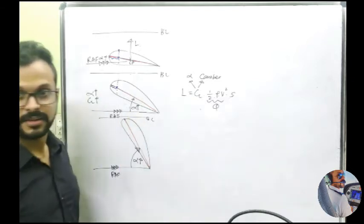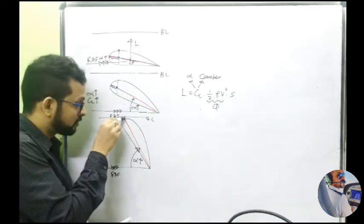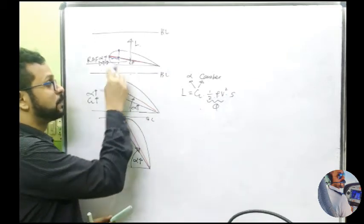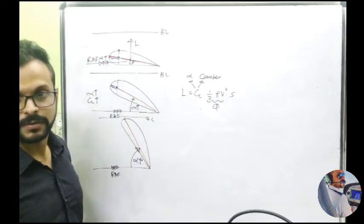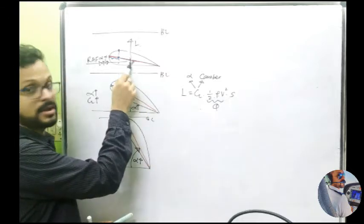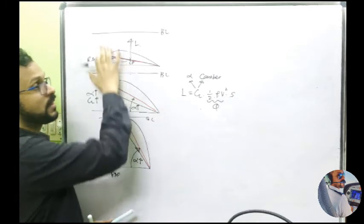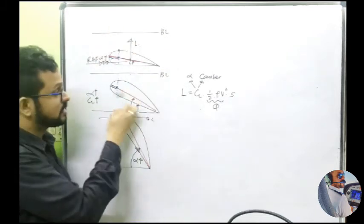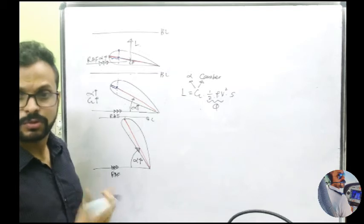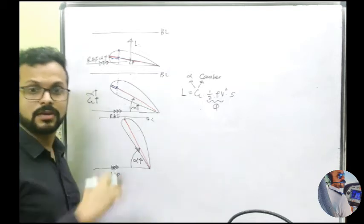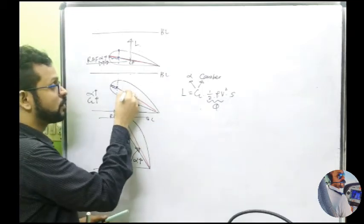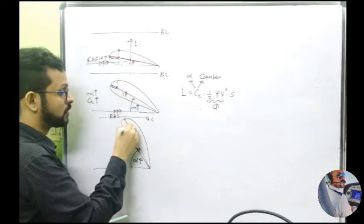That is where the area of cross section with the boundary layer is the lowest, and therefore the pressure is going to be the lowest — maximum lift is produced there. So what can you say about the point of maximum lift production? When you increase the angle of attack, it's actually moving forward. Therefore, if you are taking the point CP where the effective lift is acting, and the maximum lift production is moving forward, what happens to CP? The average also moves forward — CP also starts moving forward.